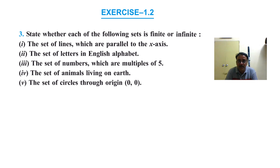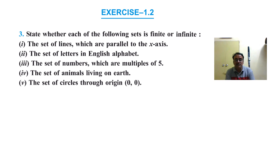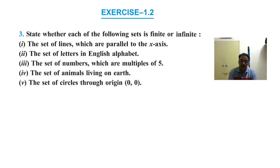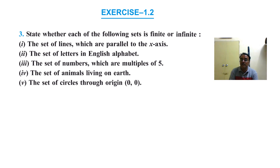The set of numbers which are multiples of 5 — multiples of 5 go on indefinitely with no end, so this is an infinite set. The set of animals living on earth — the number of animals on earth is finite, although it is a very large number; it can be counted. So this is a finite set. The set of circles passing through the origin (0, 0) — infinite circles can pass through one point, so this is an infinite set.